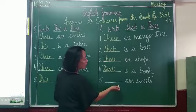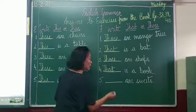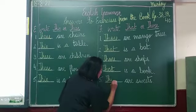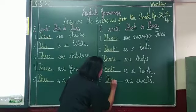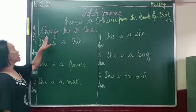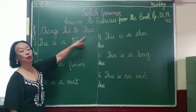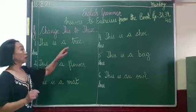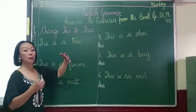And the last one, number five: 'dash are streets' — 'are' and 'streets' more than one, so 'those', T-H-O-S-E: those are streets. The next exercise, G: change 'this' to 'these'. This means showing one; these means many, so we change it to the plural. Number one: 'this is a tree' — 'this' becomes 'these', T-H-E-S-E; 'is a' becomes 'are'; 'tree' becomes 'trees'. So: these are trees.